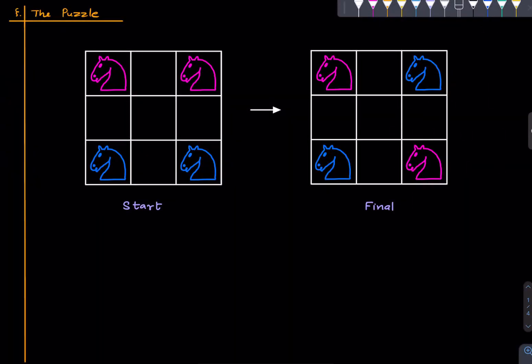Welcome to this puzzle session. Let me describe the problem. We have a 3 by 3 chess board with four knights on it - two of them are red and two are blue.